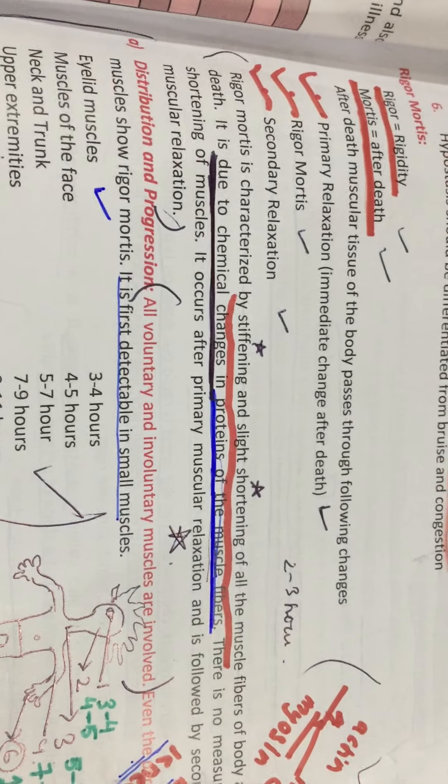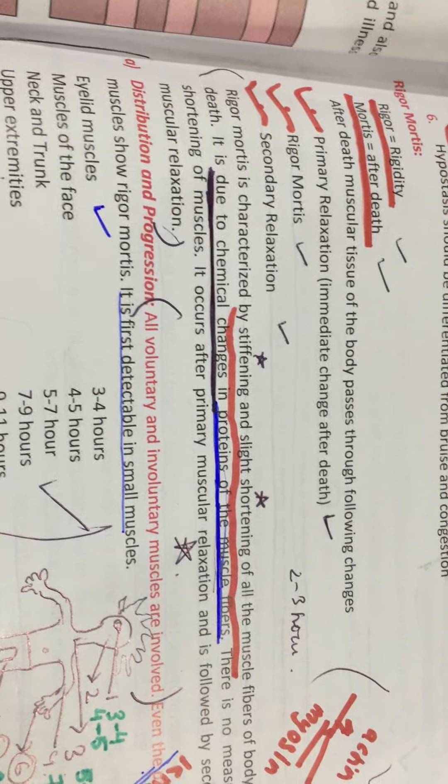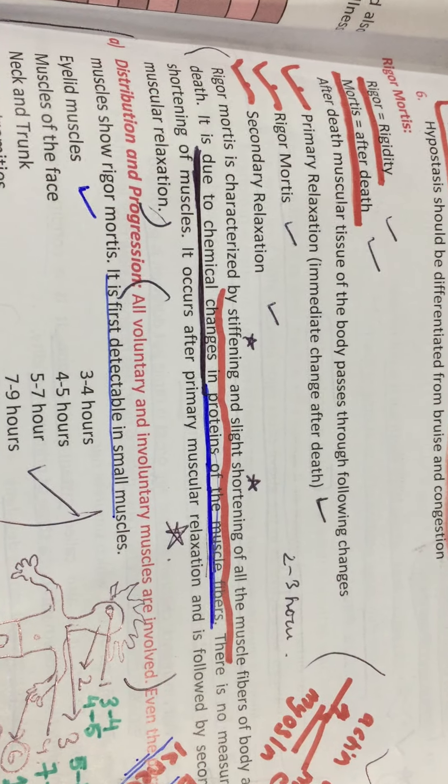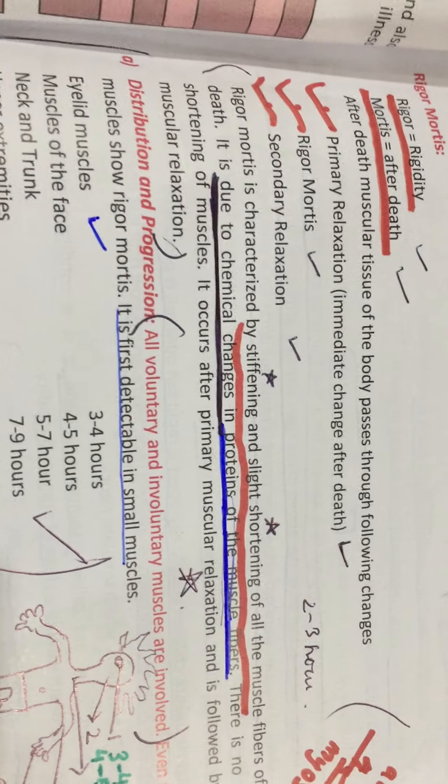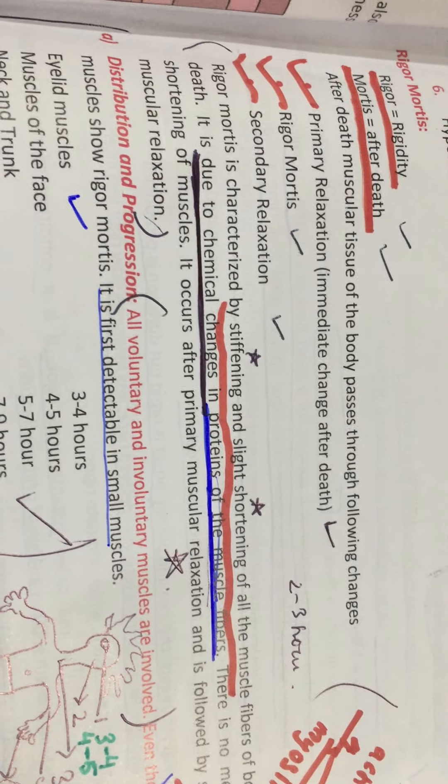Assalamu alaikum. Today we are going to discuss this topic. His name is rigor mortis. Rigor means rigidity. Mortis means death, after death.